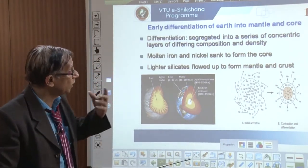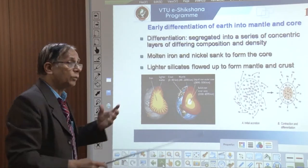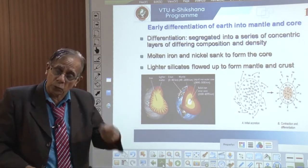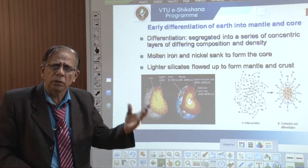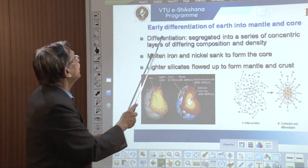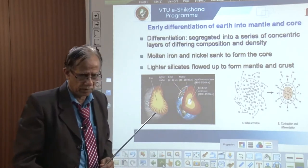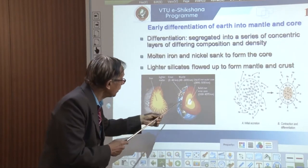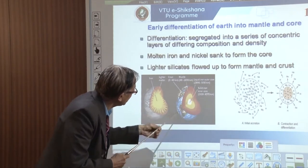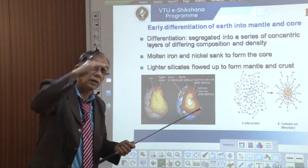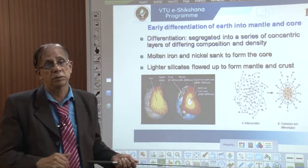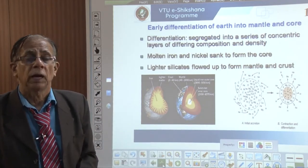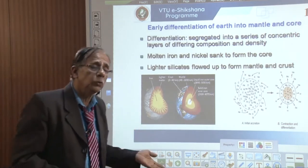During the early stage, earth was a hot gas that gradually condensed to liquid and then solidified. During this process, a kind of differentiation took place — denser materials sank deeper, moderately dense materials occupied the middle, and lighter materials remained outside. This theory is probably true.